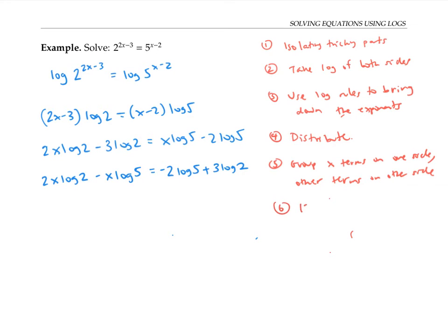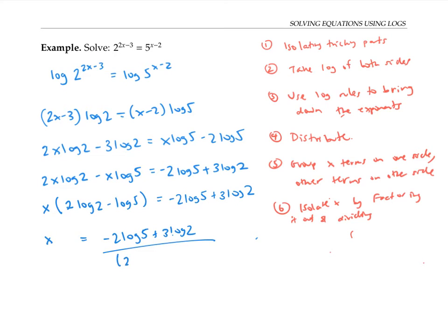Finally, I need to isolate x by factoring and dividing. By factoring, I just mean I factor out the x from all the terms on the left. So that gives me x times the quantity (2·log 2 - log 5), and that equals this mess on the right. Now I can divide the right side by the quantity on the left side.